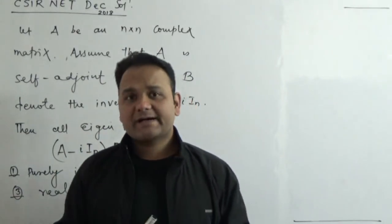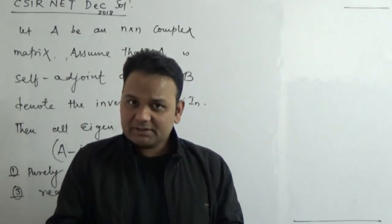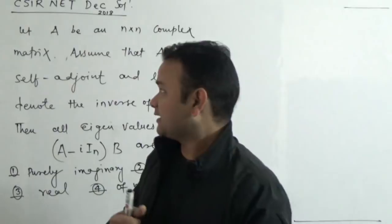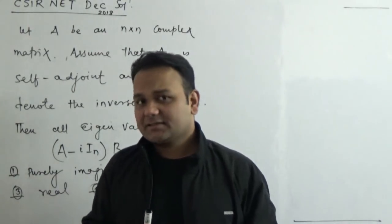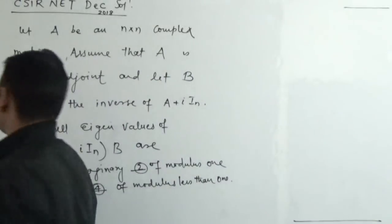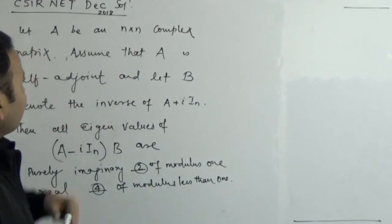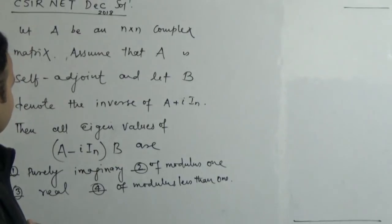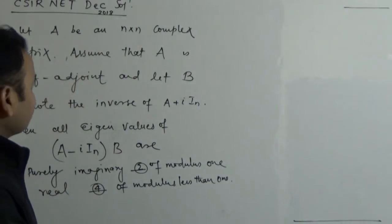Let's try to understand what is a self adjoint matrix and how one should proceed with questions related to that. This question was asked in the CSIR NET December 2018. Let's see what the question exactly says and how one should approach this kind of problem. The question is very simple: if you have an n×n complex matrix and assume that matrix is self adjoint.